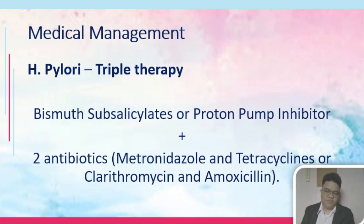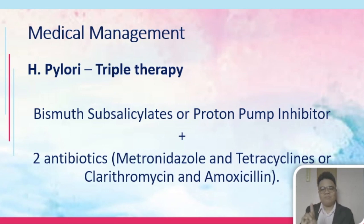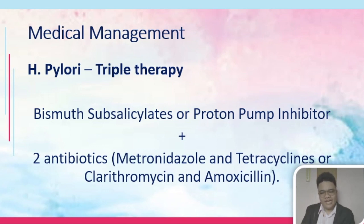For H. pylori infection, which can be detected by the urea breath test or H. pylori serum test, we need triple therapy. This could be bismuth subsalicylate or a proton pump inhibitor, plus two antibiotics — either metronidazole plus tetracycline, or clarithromycin and amoxicillin. Consider why triple therapy is needed for H. pylori, and know examples of proton pump inhibitors and tetracyclines, as well as their nursing considerations.